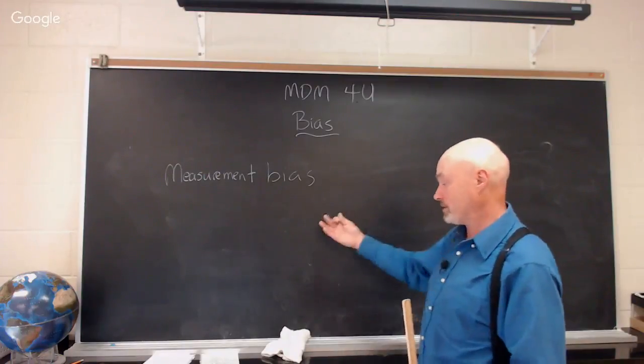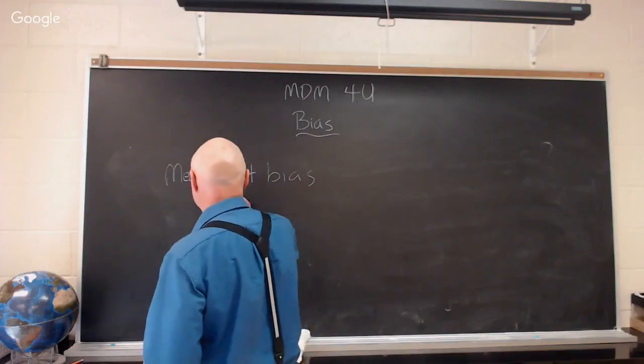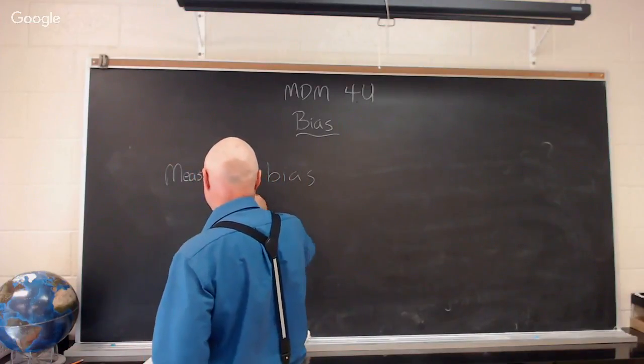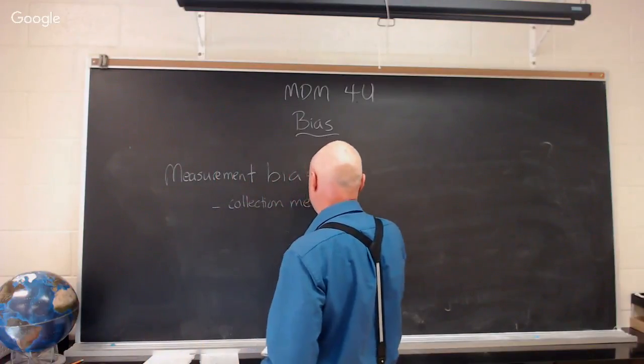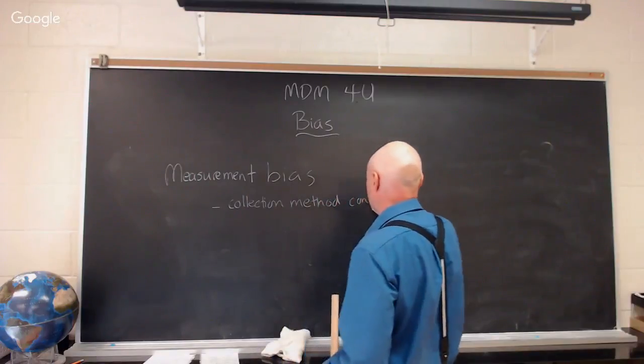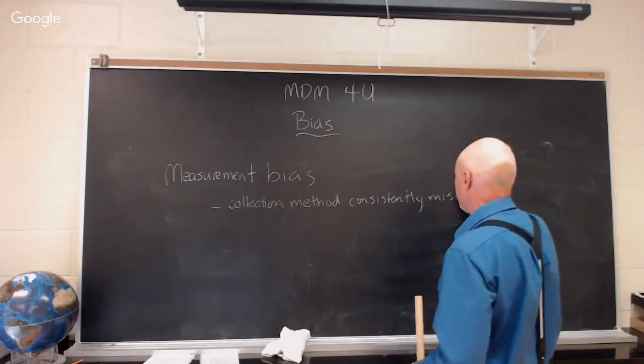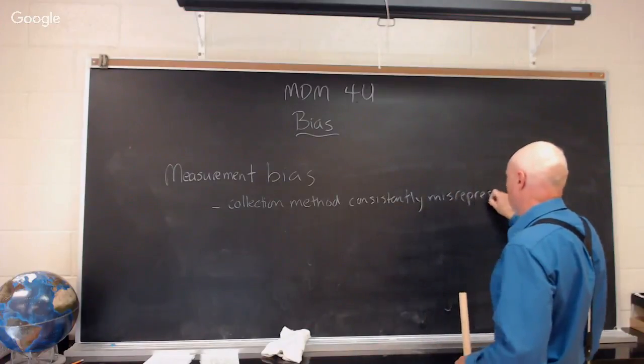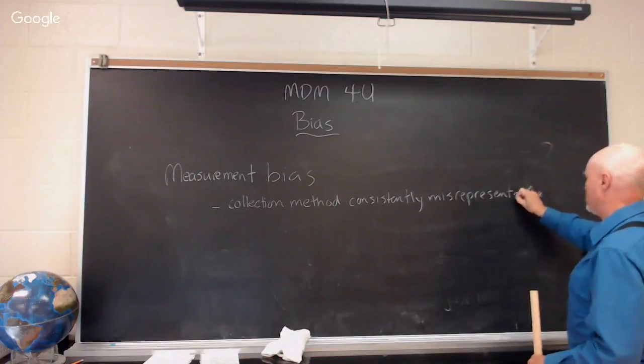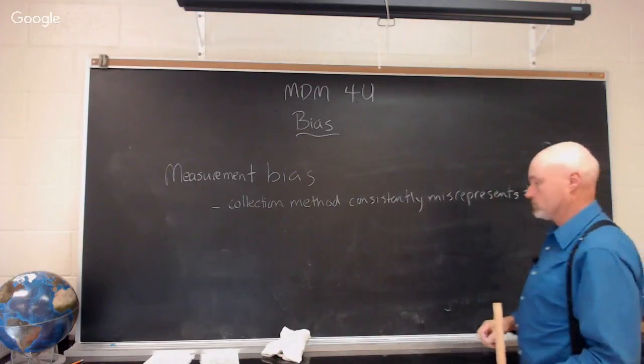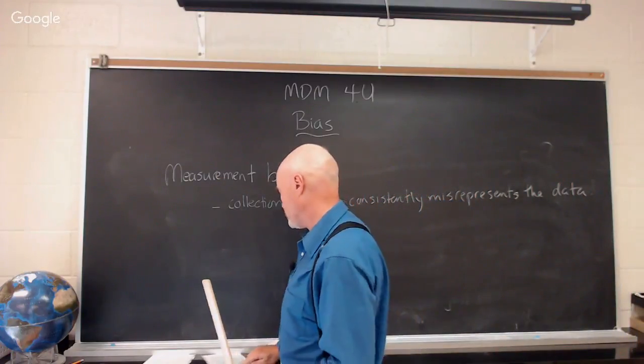In other words, all the measurements are biased an additional 10 centimeters towards the tall side. That would be an extreme example of measurement bias. In other words, your measurement, your collection method consistently misrepresents the data in one direction only. In the case of the ruler, you're always getting a taller soybean plant.